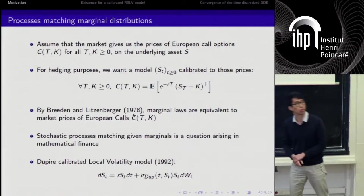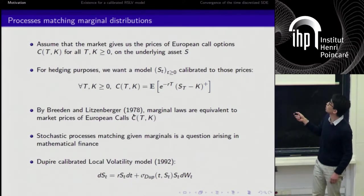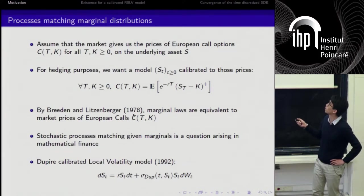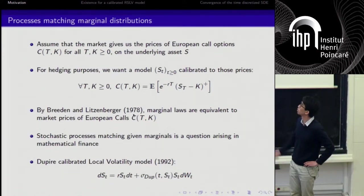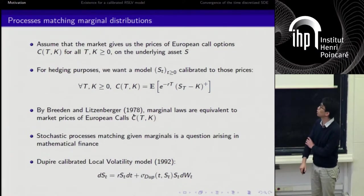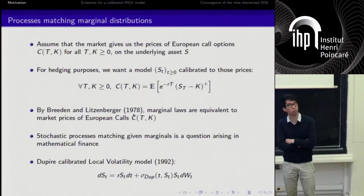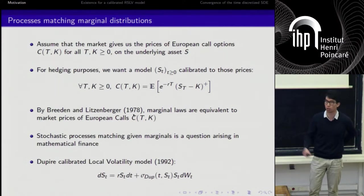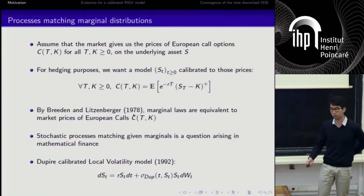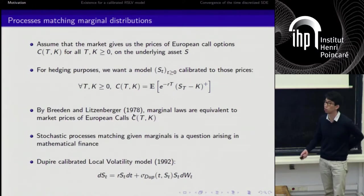For pricing and hedging purposes, we want to model this underlying asset so that when we take the discounted expectation of the payoff, it gives us the real price given by the market. So we want to match both sides of this equation. Why do we want to do so? It is because the banks do not only trade call options, they also trade much more sophisticated options. The principle of hedging and pricing is that the traders want to replicate the sophisticated option or at least estimate the price using the simpler options that are available by the market. This is why we want to calibrate the model.